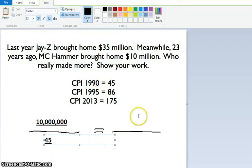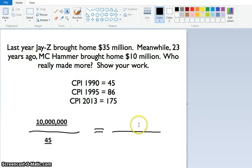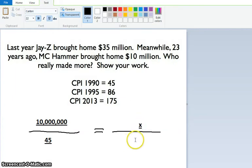Now you're looking for what this $10 million is going to be worth down the road, so you shouldn't have put anything here except for an X. And down here, the CPI is $175.